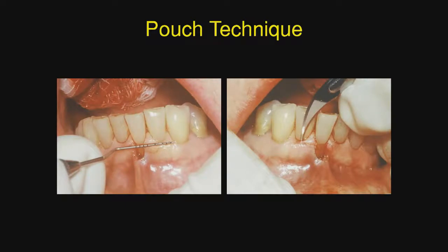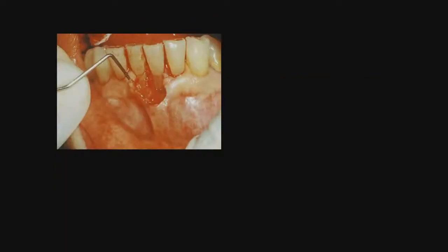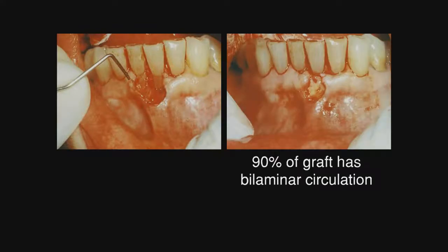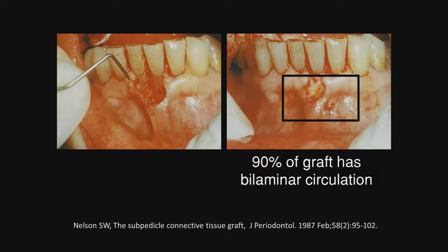The pouch technique to treat this. In this early case you'll notice how we are flapping the papilla, creating a pouch, into which we will drop connective tissue. You will note that 90% of the graft has been covered by soft tissue, meaning we have bilaminar circulation, as Nelson described back in 1987.